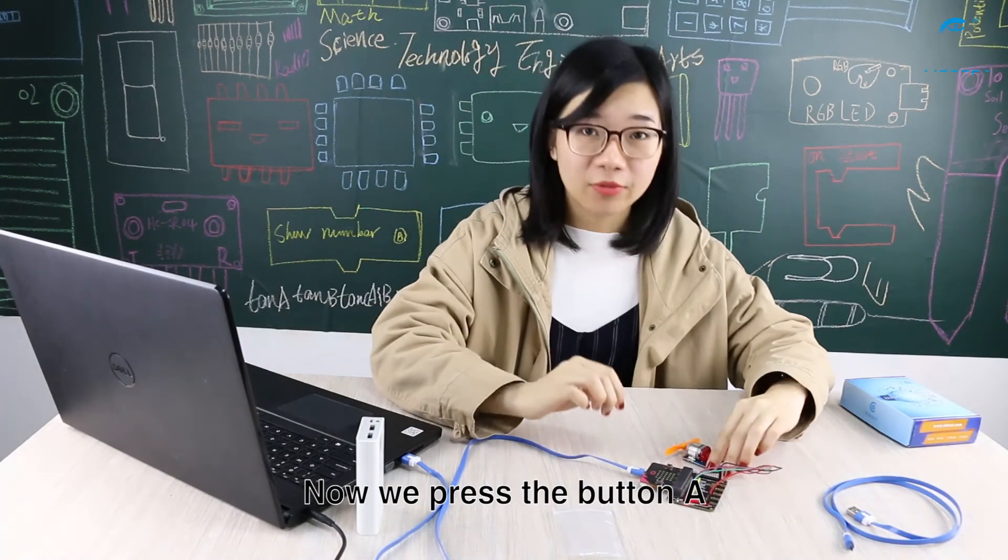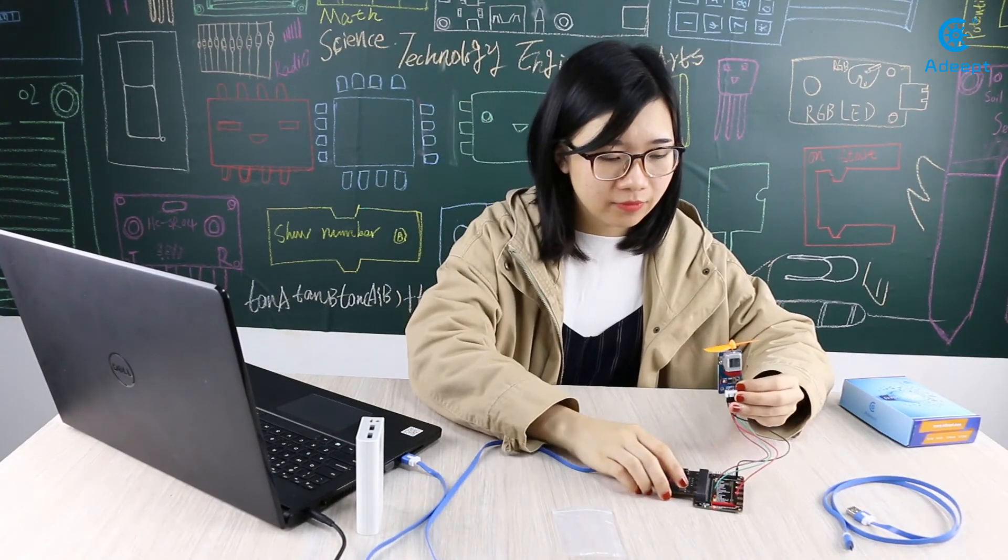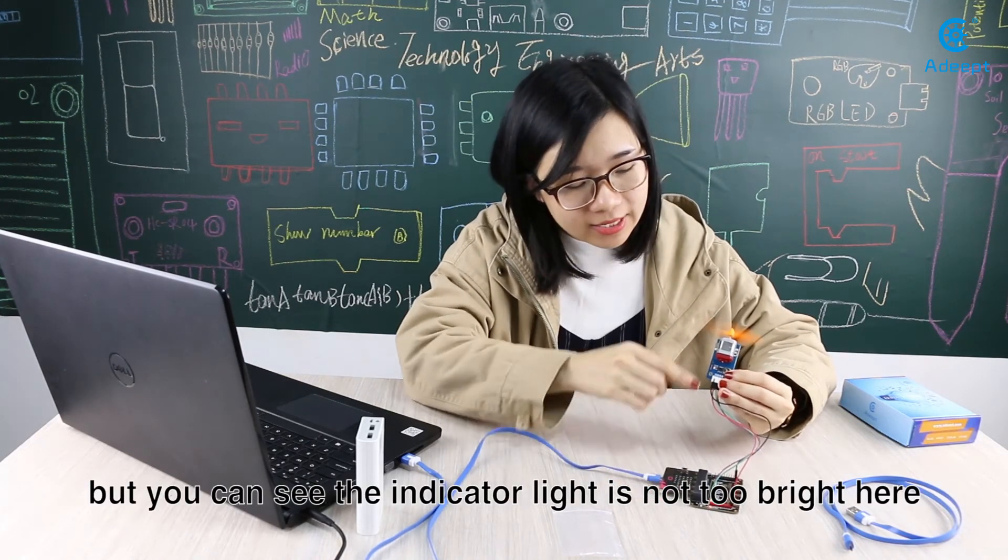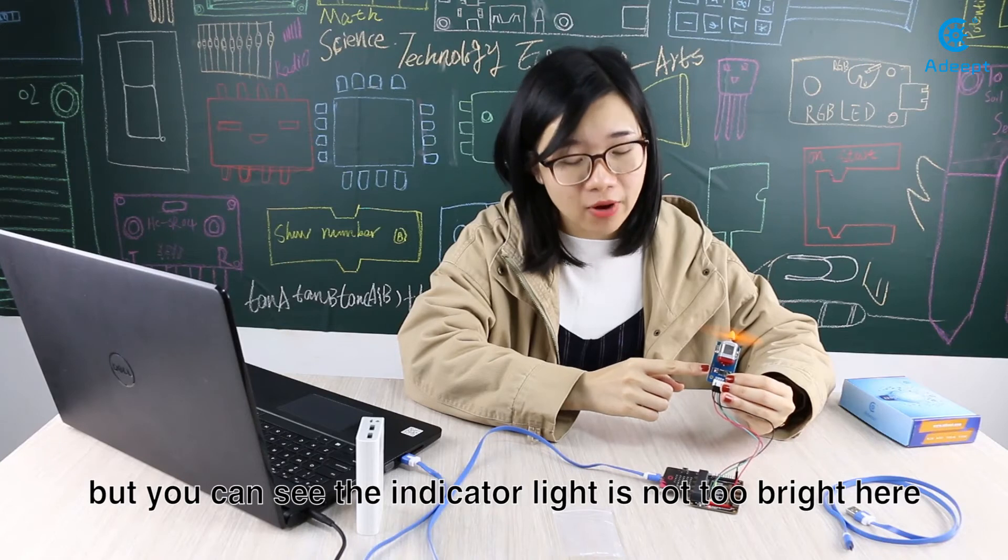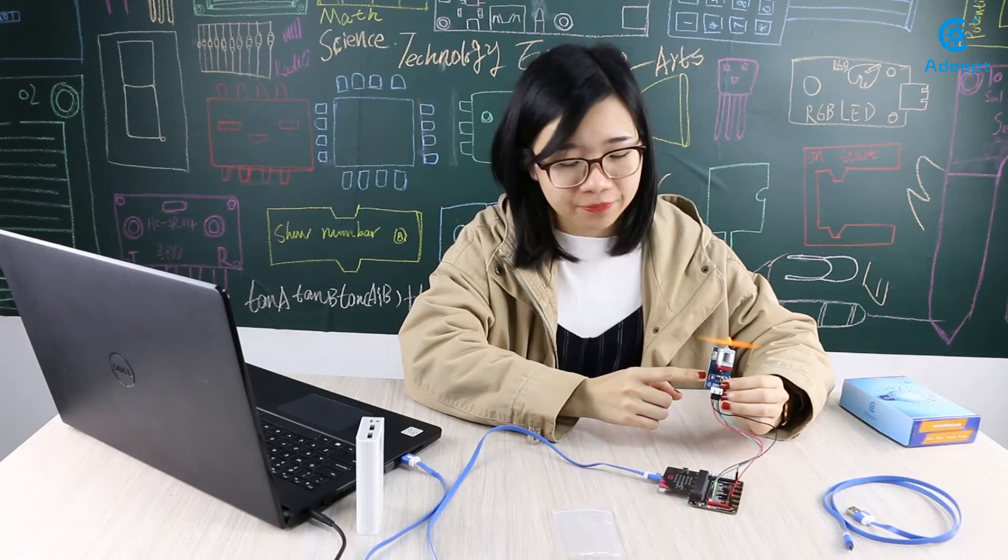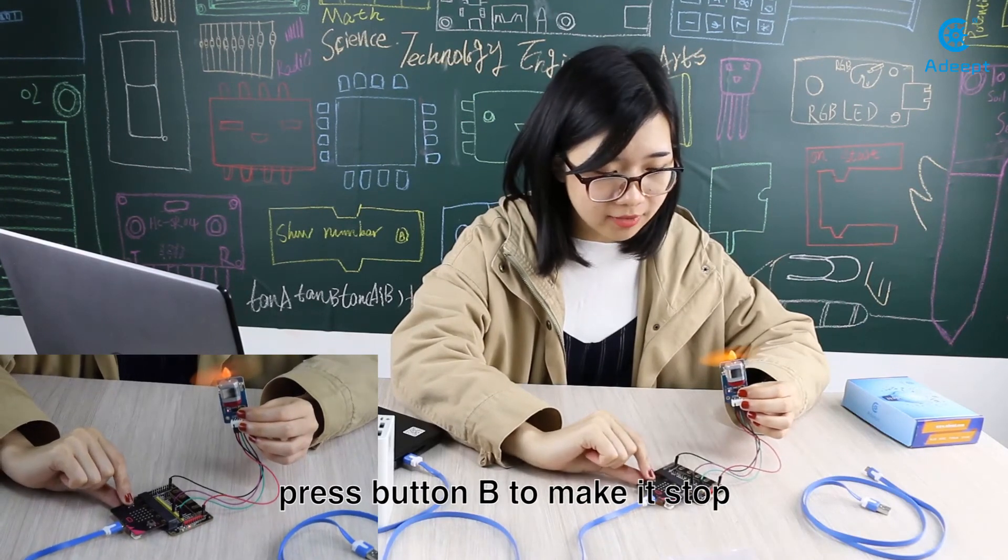Now we press button A. The motor starts to rotate. But you can see the indicator light is not too bright here. We need to connect external power. Press button B to make it stop.